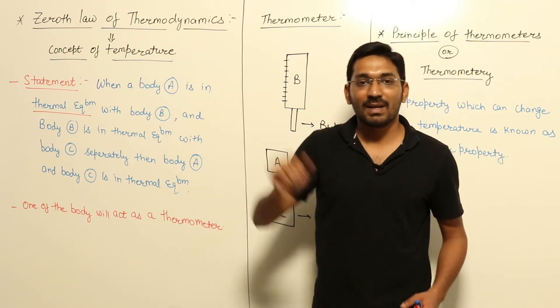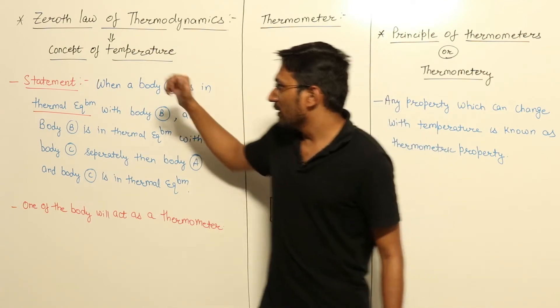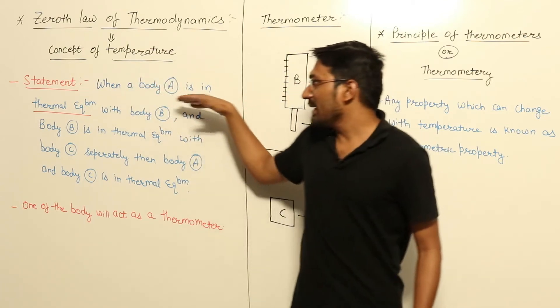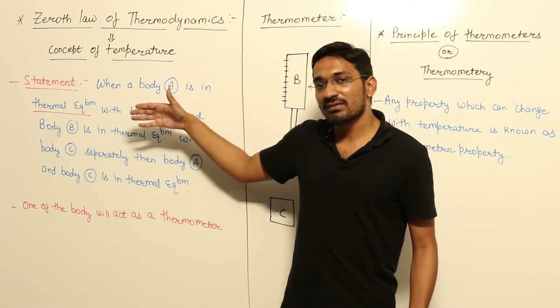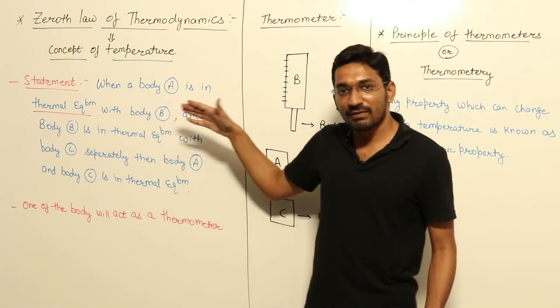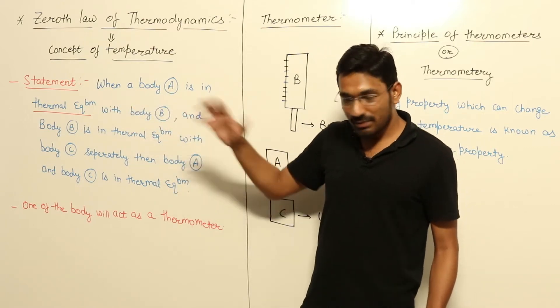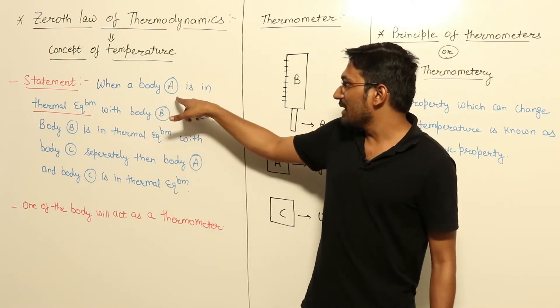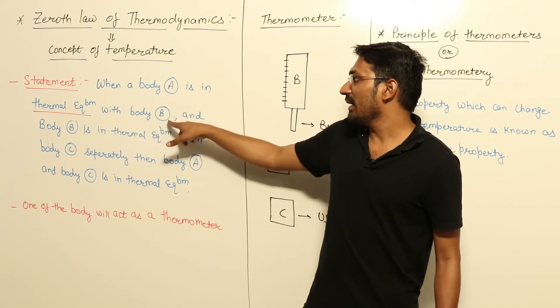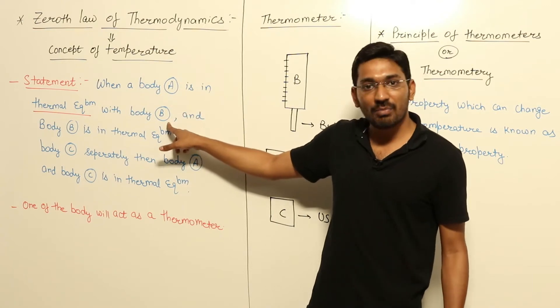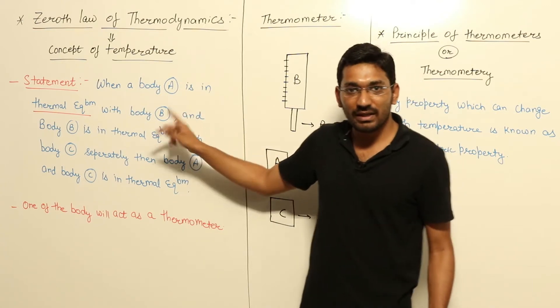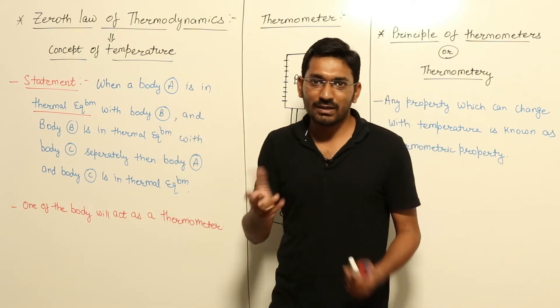When a body A is in thermal equilibrium with body B, that means the temperature of body A and temperature of body B are equal - one and the same.